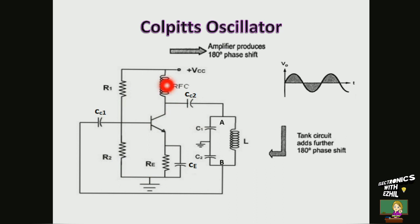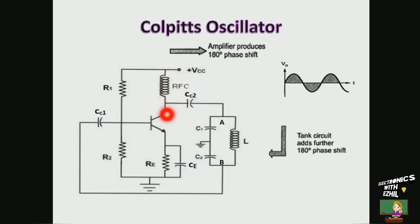RFC is the radio frequency choke which has very high reactance for high frequencies, so it can be treated as open circuit. For DC conditions, the reactance of the RFC choke is 0, so it allows DC to pass through it and blocks AC signal. Hence it provides isolation between AC and DC operation.